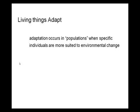Adaptation, by contrast, occurs over many years and many generations. Adaptation occurs in a population when specific individuals are more suited to large environmental changes — such as a large change in climate. Because of genetic variation within the population, certain individuals will be more suited and more successful. Over time, over generations, the entire population can change. This requires many years and many generations, and we'll discuss this later in the semester when we cover natural selection and evolution.